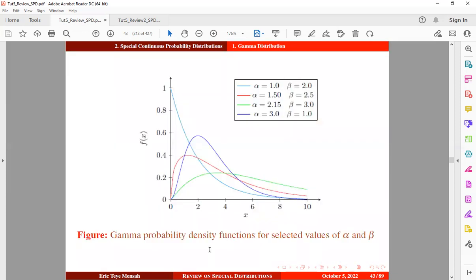So this is a figure showing us a graph of the gamma probability density functions for selected values of alpha and beta. So when alpha is 1, we have this exponential decay. When alpha is 1.5, the shape changes. So for different values of alpha, we can see that the shape of the distribution will change.